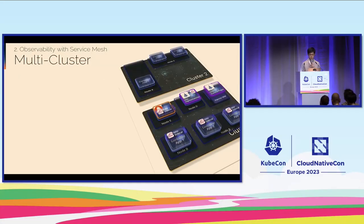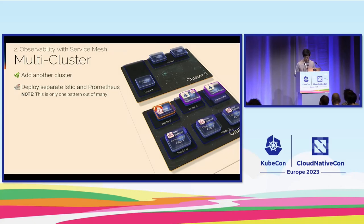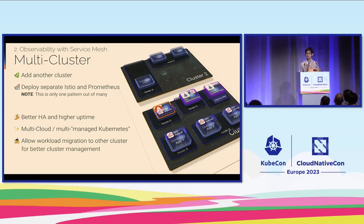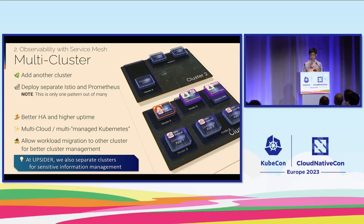Let's get into the multi-cluster scenario. Adding another cluster and deploying separate Istio and Prometheus — this is only one pattern out of many, and definitely not a silver bullet. Why do we do it? We have better HA and higher uptime with multi-cluster. We can do multi-cloud, multi-managed Kubernetes. With multiple clusters you can migrate workloads from one cluster to another during maintenance, handle region setup, and at Upsider we also separate clusters based on sensitive information management for specific regulatory or auditory requirements.